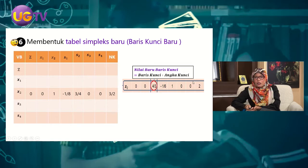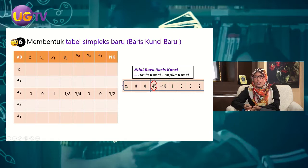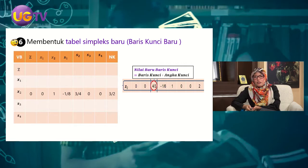Baris kunci yang lama semua dibagi 4/3: 0 dibagi 4/3 = 0, 0 dibagi 4/3 = 0, 4/3 dibagi 4/3 = 1, -1/6 dibagi 4/3 = -1/8, 1 dibagi 4/3 = 3/4, 0 dibagi apapun = 0, dan 2 dibagi 4/3 = 3/2.